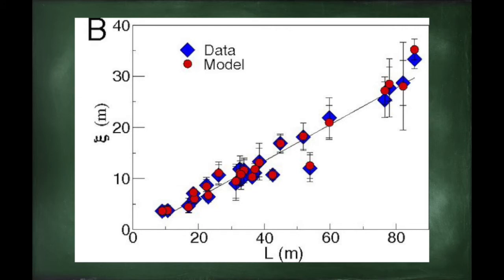This means that a typical flock exists near a critical point, which is a cool analog to the physical phase systems like magnets.